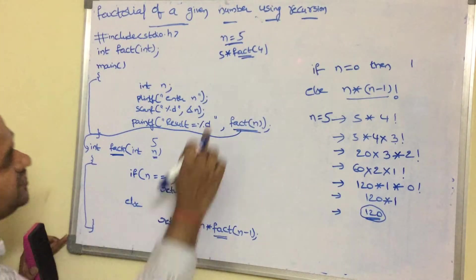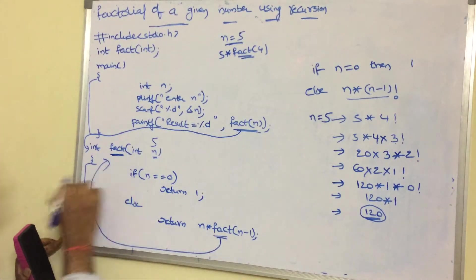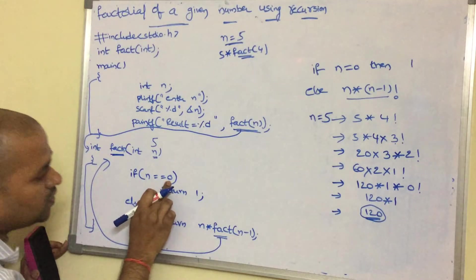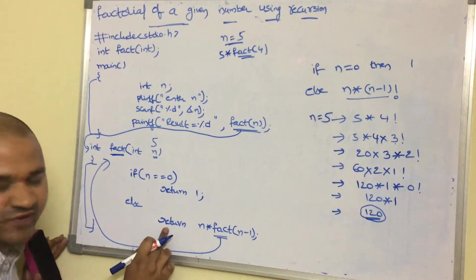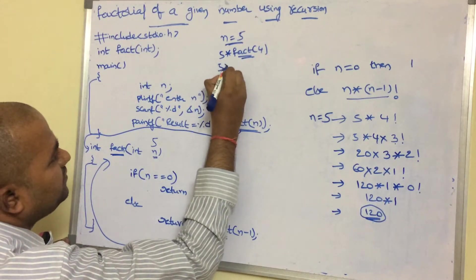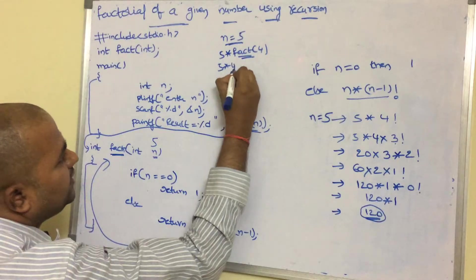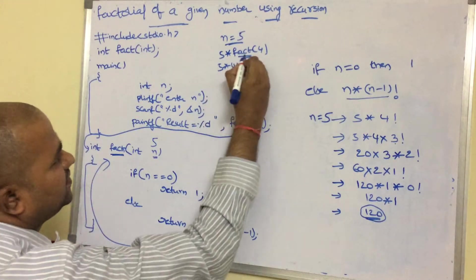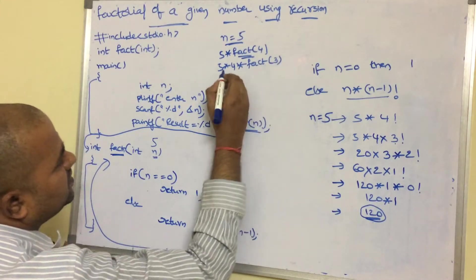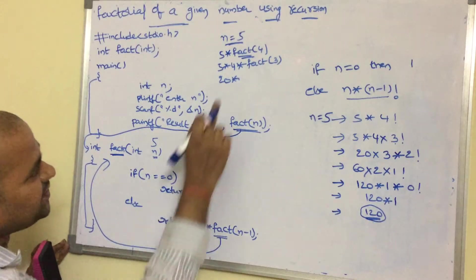Once again we are calling fact function, so control is transferred to the function definition. Now n value is 4; 4 == 0 is false, so the else block executes: 4 * fact(3). So we have 5 * 4 = 20, giving 20 * fact(3). Control transfers again, now n value is 3; 3 == 0 is false, so: 3 * fact(2). So 20 * 3 = 60, giving 60 * fact(2).